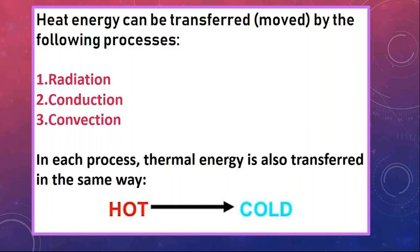But how can heat energy be transferred from one object to another? Or even within one object — from the warm area to the cold area? This can happen through the following processes: radiation, conduction, and convection. In each process, remember that thermal energy is transferred from hot to cold until both areas or objects reach the same temperature.